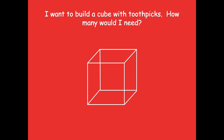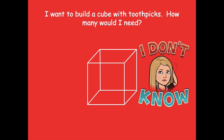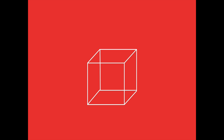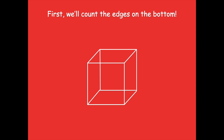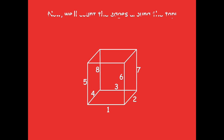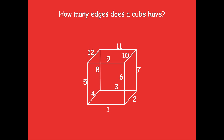Now I want to build a cube with toothpicks — how many would I need? Let's count the edges. First we'll count the edges on the bottom: one, two, three, four. Next, we'll count the edges around the middle — the parts that are sticking up: five, six, seven, eight. Now we'll count the edges around the top: nine, ten, eleven, twelve. So how many edges does a cube have? We've got twelve edges.